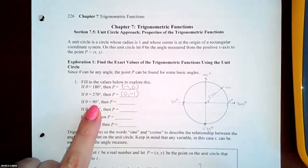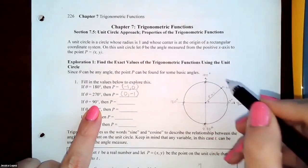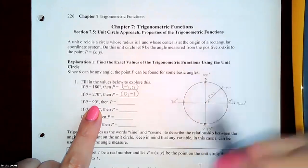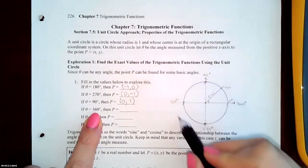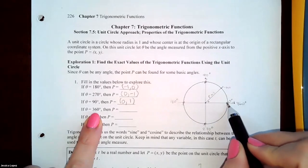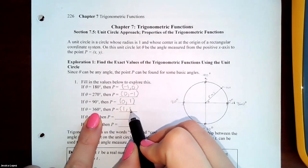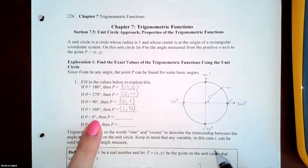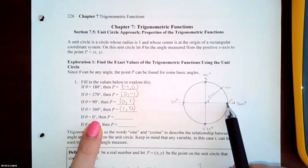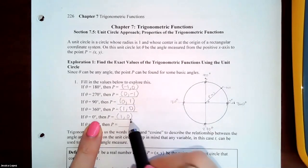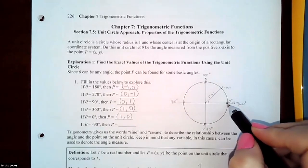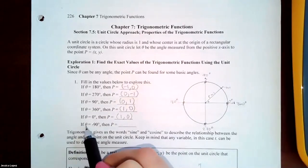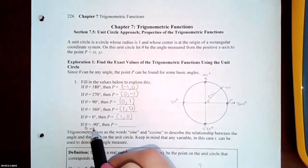For 360 degrees, starting here and going all the way around back to the same spot, the coordinates are (1, 0). If theta equals 0, since that's the same as not moving at all, those coordinates are also (1, 0). If theta equals negative 90 degrees, that means going downward 90 degrees, so we end up at the bottom. Theta equal to negative 90 degrees is the same as theta equal to 270 degrees.